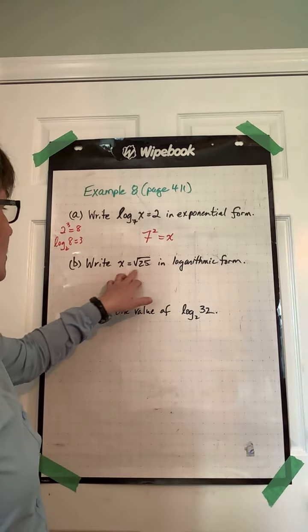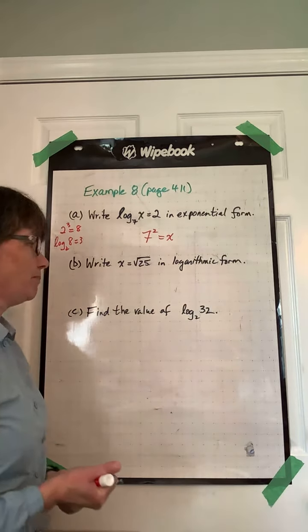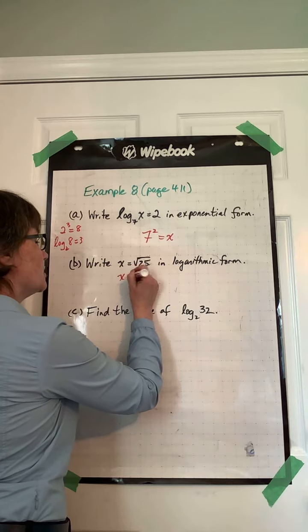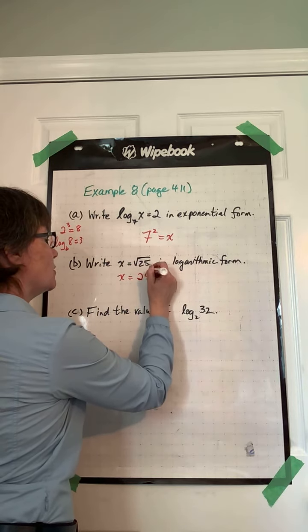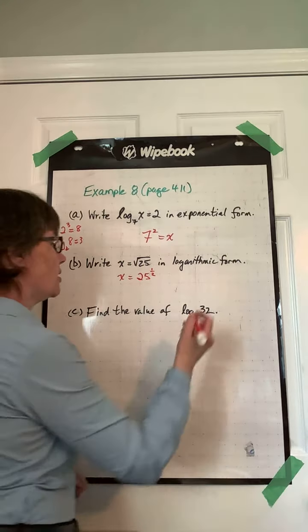Write x equals root 25 in logarithmic form. Okay, so first I need to represent this as an exponent, that's 25 to the power of 1 half as an exponent, and we can change it into log form.